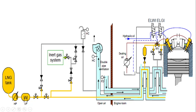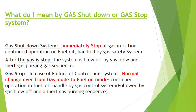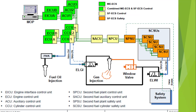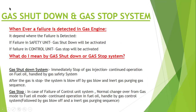In today's video we're going to talk about what I mean by gas shutdown and gas stop. Whenever a failure occurs in a gas engine, it depends on where the failure is occurring. If it is occurring in the safety system, the gas shutdown will be activated, and if it is occurring in the control unit, the gas stop will be activated.